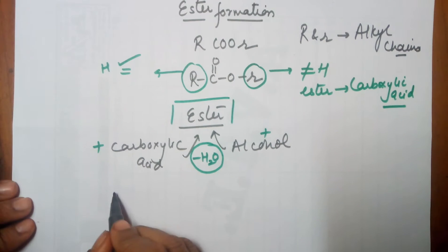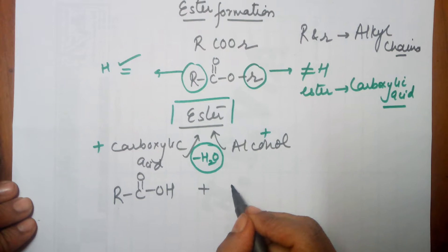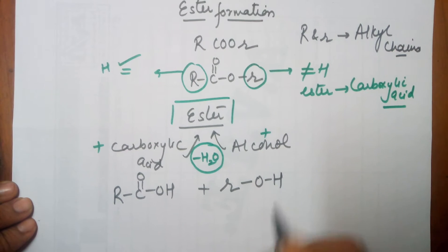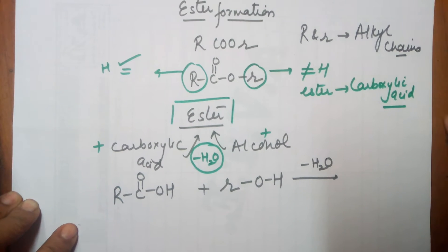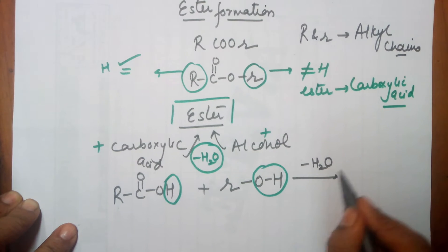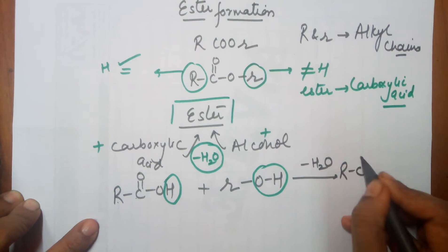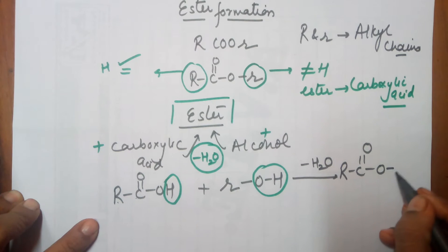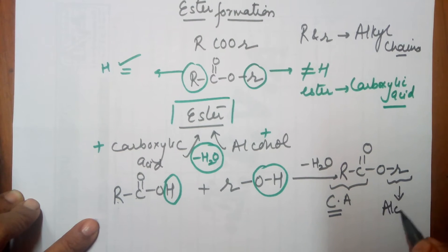What does a carboxylic acid molecule look like? R-C-O-O-H. And what does an alcohol look like? R-O-H. Out of these two, if you can remove a water molecule — this is the water molecule loss: H from here and an OH from here, so H₂O is lost. What am I left with? R, C double bond O, O, and your small r. So this part of the ester is from carboxylic acid, while this part of the ester is from alcohol.